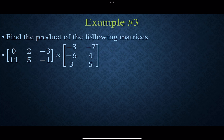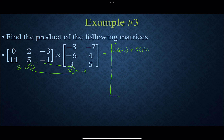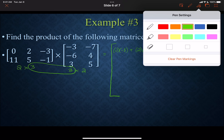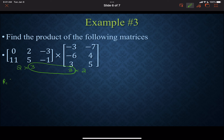Now let's work through this first example. We have 2 rows and 3 columns times 3 rows and 2 columns. The inner numbers match, so it will work and produce a 2 by 2 matrix. We multiply each element in the first row by each element in the first column: 0 times −3, 2 times −6, and −3 times 3. That gives 0 − 12 − 9, which is −21. Then for row 1, column 2: 0 times −7, 2 times 4, and −3 times 5, giving 0 + 8 − 15, which is −7.